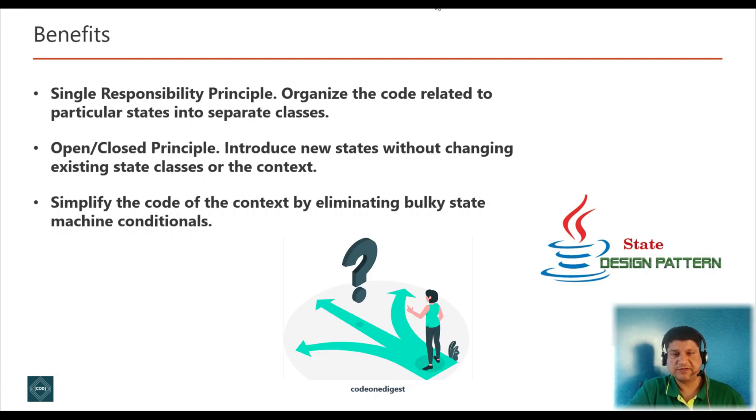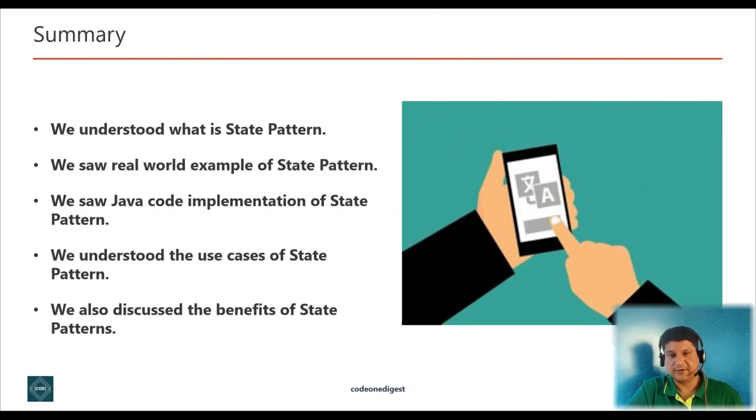So, what are the benefits we get out of this pattern? The most important benefit that we get out of this pattern is single responsibility principle. This pattern organizes the code related to a particular state into a separate class. It also supports open-close principles that introduce new states without changing existing state class or context class. It simplifies the code of a context by eliminating bulky state machine conditional logic to state class.